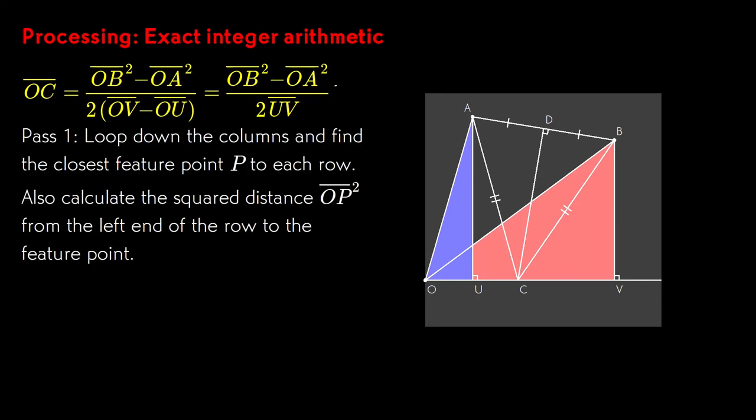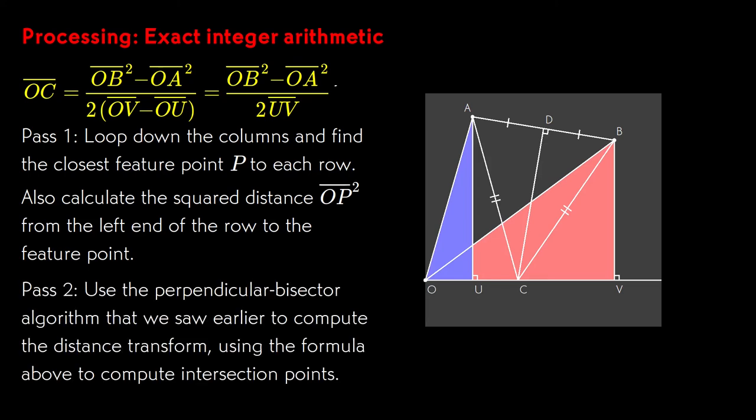We can compute the squares at the same time as we identify A and B as being the closest feature points to the row in their respective columns. There's a simple linear time first pass to find the closest points to each row in each column, and fill in the squared distances. The algorithm for processing rows then runs on the second pass to identify the two-dimensional closest points, and fill in the intersection points and distances.